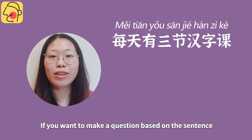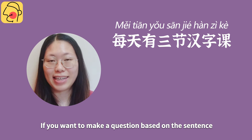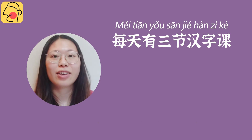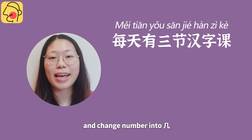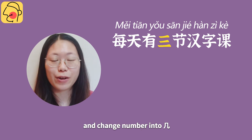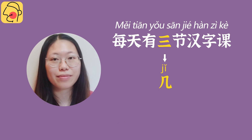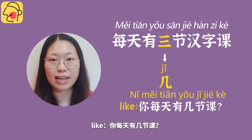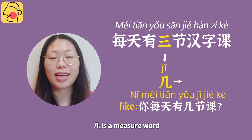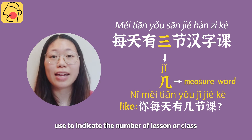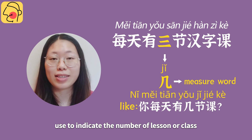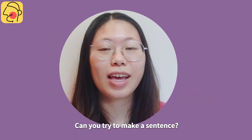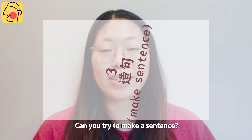If you want to make a question based on the sentence, you can add a subject and then change the number into 几. Like, 你每天有几节课. 几 is a measure word used to indicate the number of lessons in class. Can you try to make a sentence?